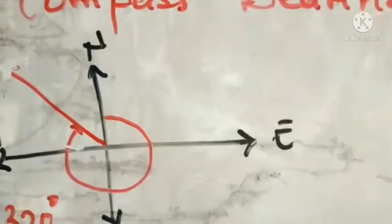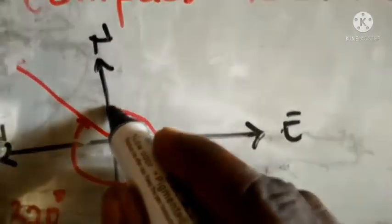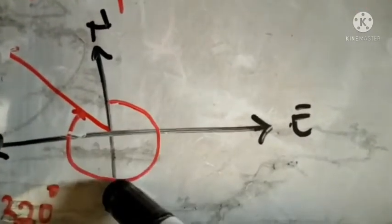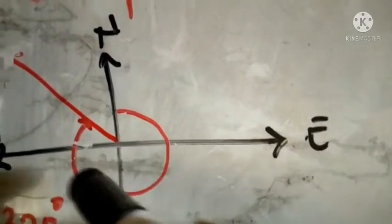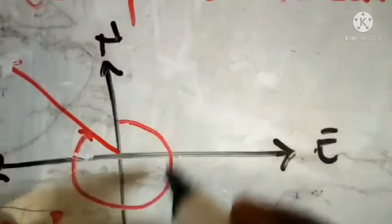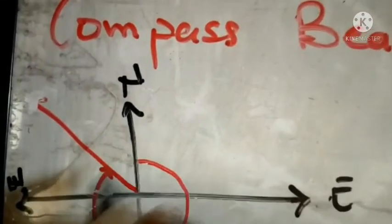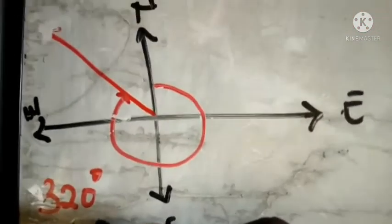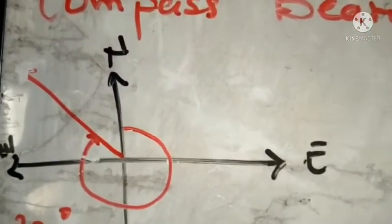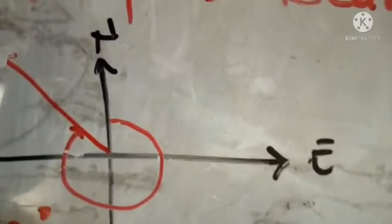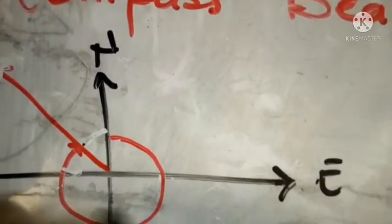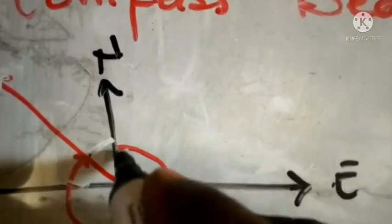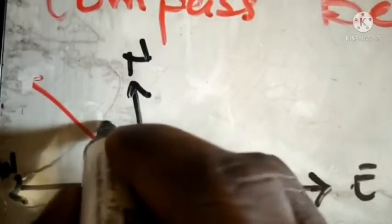We are given 320 degrees. I take the measurement from the north direction. From north going clockwise: 90°, 180°, 270°, and 320° will be somewhere between west and north. We know everything is 360°. If from north to this point is 320°, then what is left will be 360 minus 320, which is 40°.